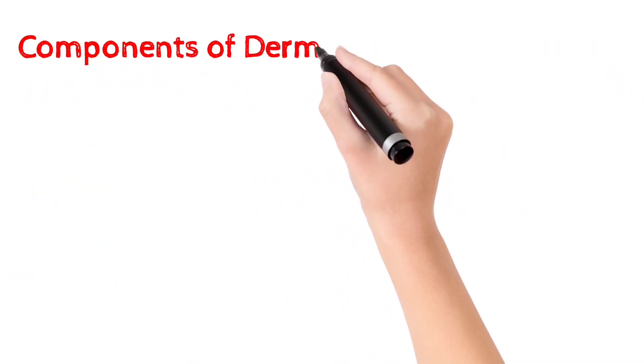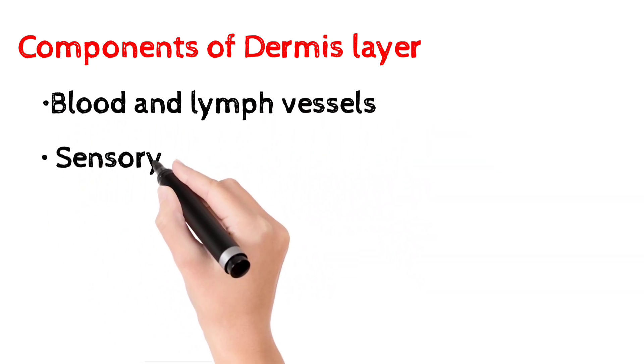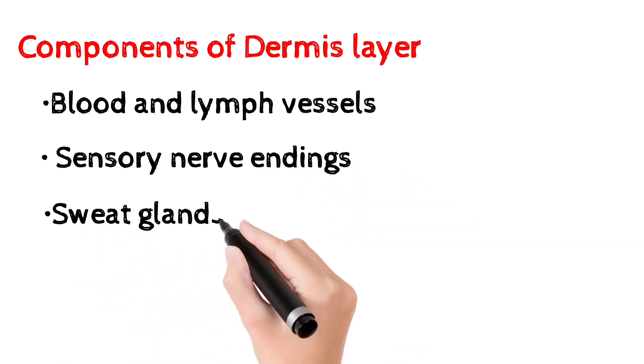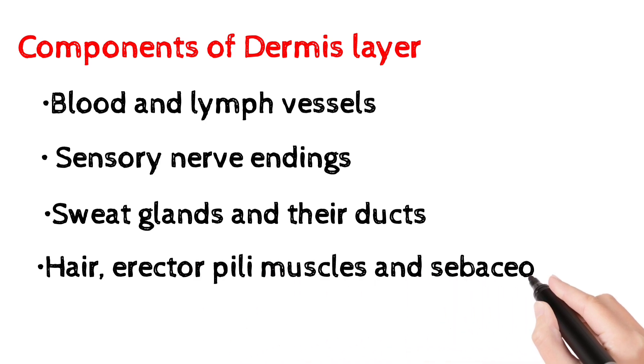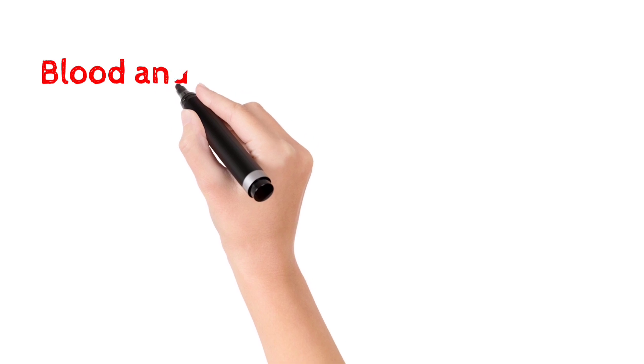Components of the dermis include blood and lymph vessels, sensory nerve endings, sweat glands, hair erector pili muscles, and sebaceous glands.